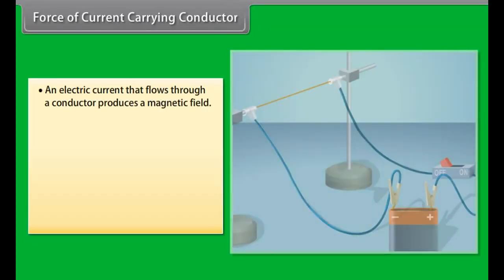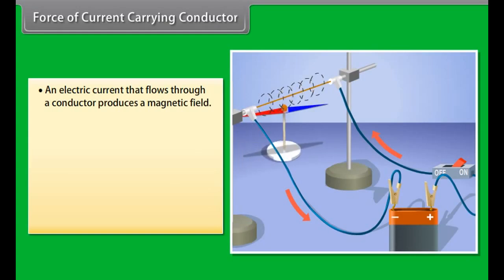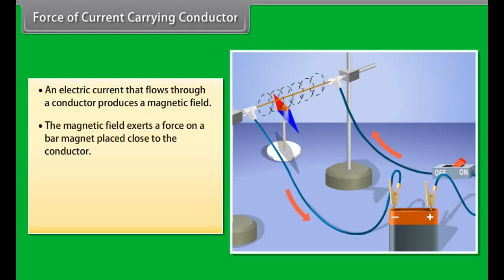Force of Current Carrying Conductor. We have seen that an electric current that flows through a conductor produces a magnetic field. The magnetic field so produced exerts a force on a bar magnet placed close to the conductor. French scientist André-Marie Ampere (1775-1836) discovered that the bar magnet would also exert an equal and opposite force on the conductor.